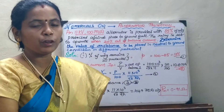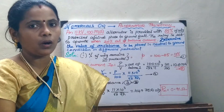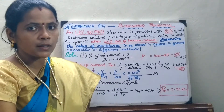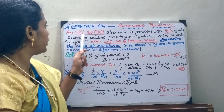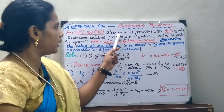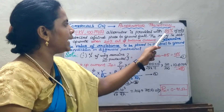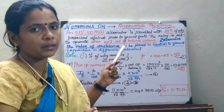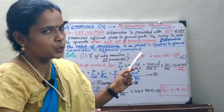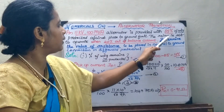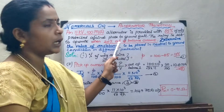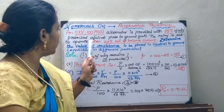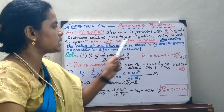In today's session, we will be seeing a numerical on alternator protection. Here we have chosen an 11 kV, 100 MVA alternator where 85 percentage of the winding is protected. The relay is set to operate when there is a 20 percentage out-of-balance current. We are asked to find out the value of the resistance in the neutral connection.